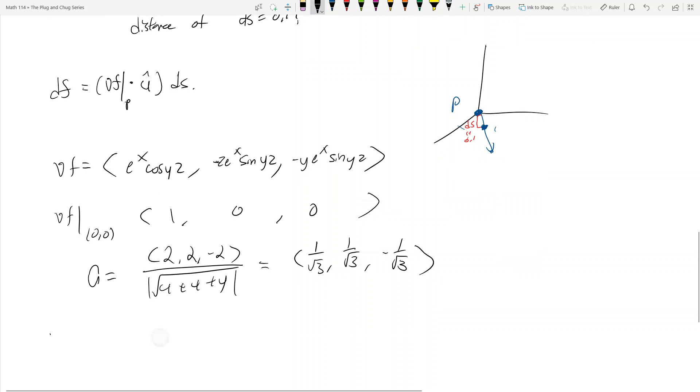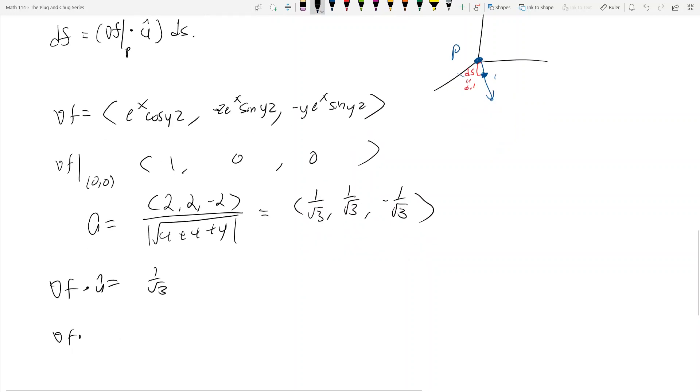And so now we dot it. df dotted with u hat, well, that's just going to be 1 root 3, because I'm only taking the first value, 1 times that guy. And then now we've got to multiply this with ds, and that's equal to 1 root 3 times 0.1. This is the correct answer to this problem. So this is the change in the function value. It's going to increase by this much if we move from the origin to this point right here, 0.1 from the origin. Not terribly an important problem, but I'm just going to include it anyways because it might show up on homework.